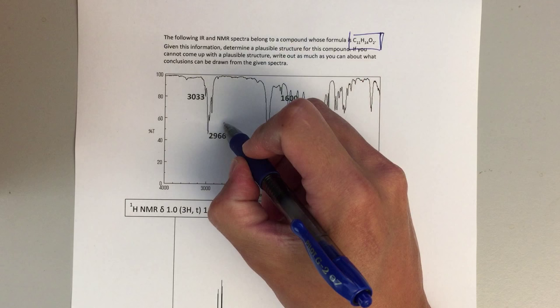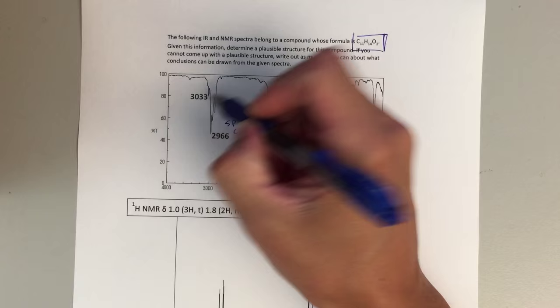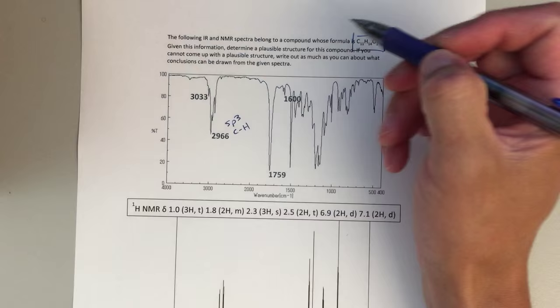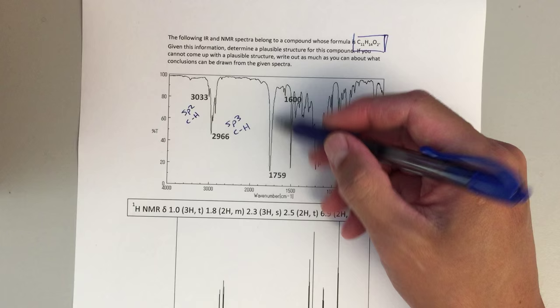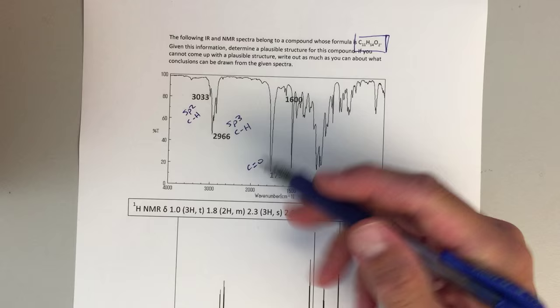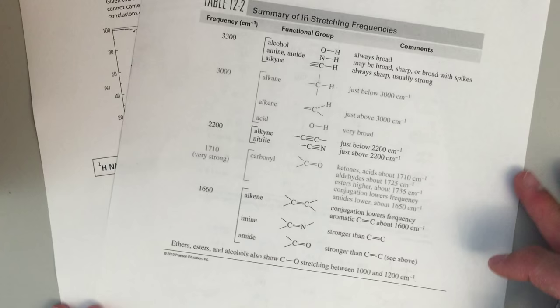Here we've got some peaks just below 3000, so right away I'm going to say SP3 CH, so we've got some alkane type SP3 CH bonds that are stretching there. This 3033 is going to be an SP2 CH, so just above 3000, that's my SP2 hybridized CH bonds. At 1759, I think that this is pretty clearly a C double bond O, and then we can sort of think about what type of C double bond O, what type of carbonyl stretch is that.